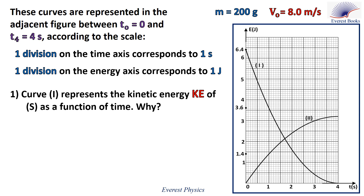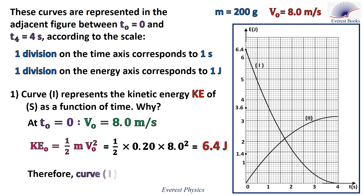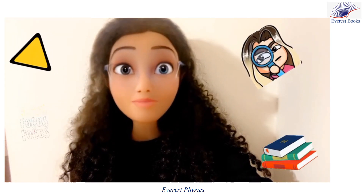Question B1: curve I represents the kinetic energy KE of the object as a function of time. We know the mass is 200 grams and at time zero v0 equals 8 meters per second. The initial kinetic energy is one-half m v0 squared — replacing m by 0.2 kilograms and v0 by 8 meters per second gives 6.4 joules. Looking at the two curves, the curve that starts at 6.4 joules is curve I, so curve I represents KE as a function of time.